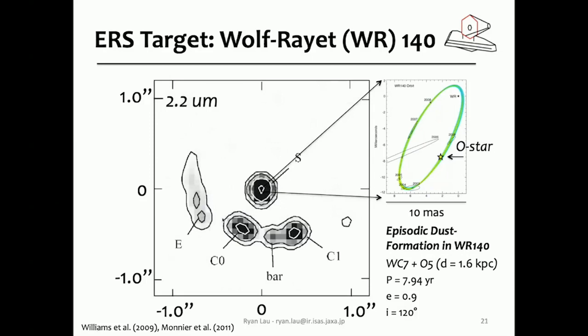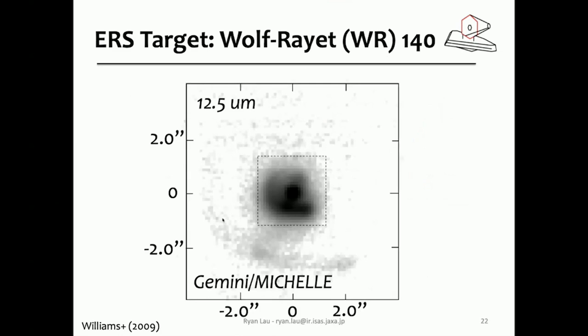Now we're looking at a Michelle image — a 12.5 micron thermal infrared image taken from Gemini. There are two interesting things to point out. You see a very bright central point source — that's not coming from dust, that's free-free emission from the Wolf-Rayet winds. It's quite bright and it'll contaminate any low spatial resolution observation of this system, so we really need the high spatial resolution. The second thing to point out is that we see the first dust arc here, and then beyond this, at about two arc seconds away, we see the secondary dust arc. So we can study past dust formation events, and with James Webb we can pick up at least eight of these.